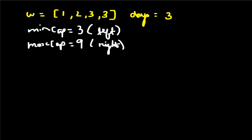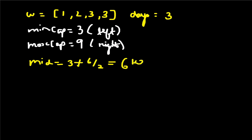First, we need to find the middle value. The mid formula is: left plus (right minus left) divided by 2. So it's 3 plus (9 minus 3) divided by 2, which equals 3 plus 3, so mid equals 6. Now we have a middle capacity of 6 kg. With 6 kg capacity, we load packages: 1 plus 2 gives 3, so the total fits in day 1.